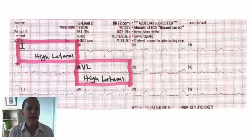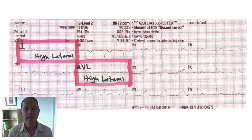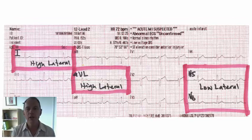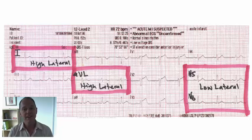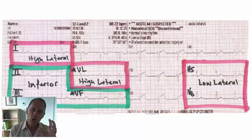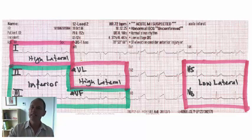First of all, let's take a look at leads 1 and AVL — those are your high lateral leads. They're closely related to leads V5 and V6, which are your low lateral leads. So leads 1, AVL, V5, and V6 are your lateral leads. Moving right along to leads 2, 3, and AVF — those are your inferior leads, the leads that relate to the inferior region of the heart.